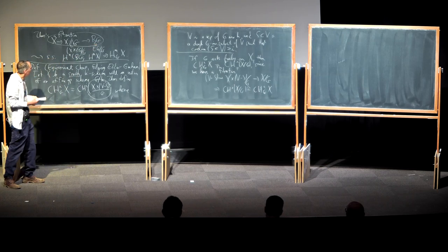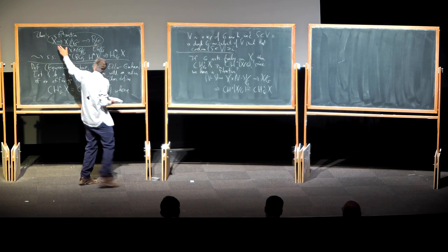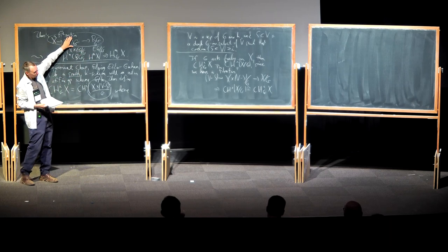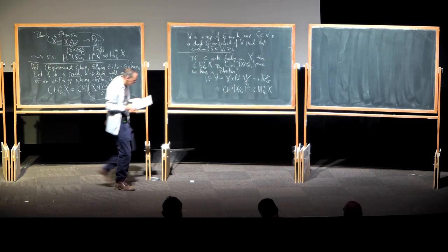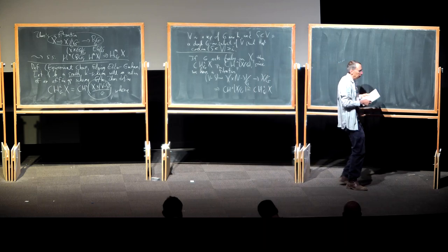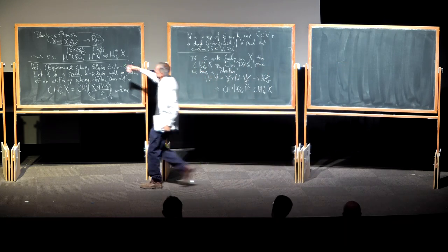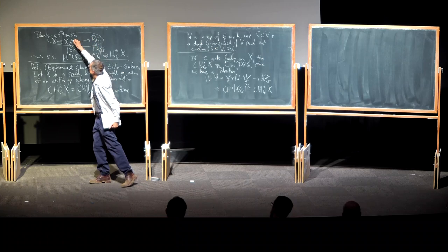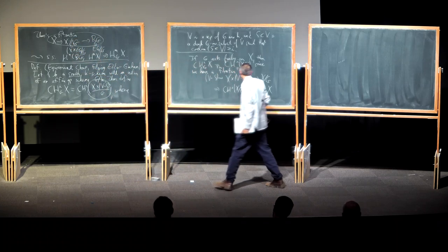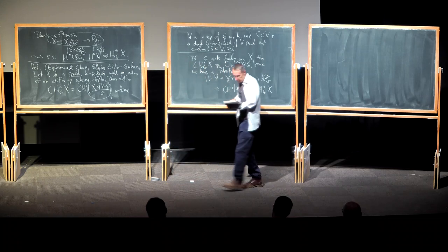Nonetheless, it's good to have this picture in mind when thinking about equivariant Chow groups. At least, one thing this makes clear is that you have a natural morphism from the Chow ring of BG to equivariant Chow groups. So equivariant Chow groups are always a module over the Chow ring of BG.